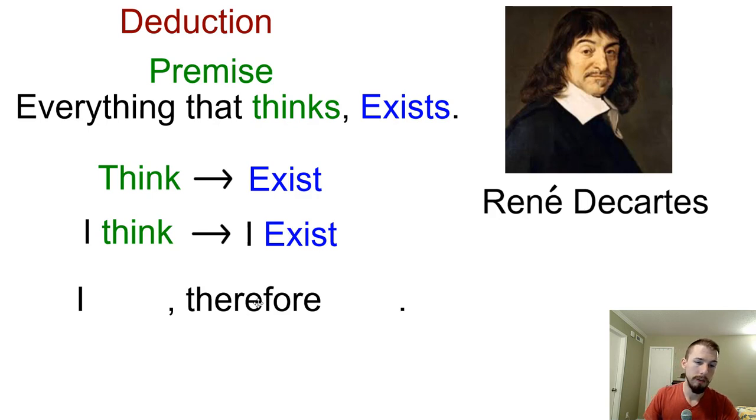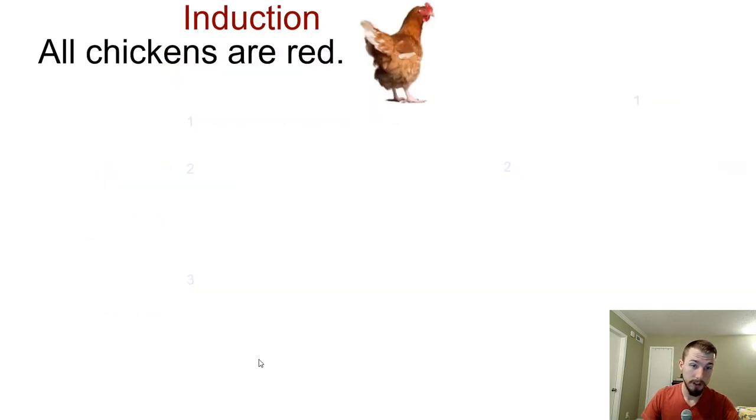So this is where the famous phrase comes from, where it says, I think, therefore I am. So it's essentially what he was getting at. So I think, I'm capable of thinking, so therefore I must exist. So apparently Rene Descartes, whenever he wasn't coming up with algebra stuff, he thought about whether or not he existed. And he came up with the idea, well, everything that thinks must exist. And I'm thinking, so therefore I must exist. So that's deduction.